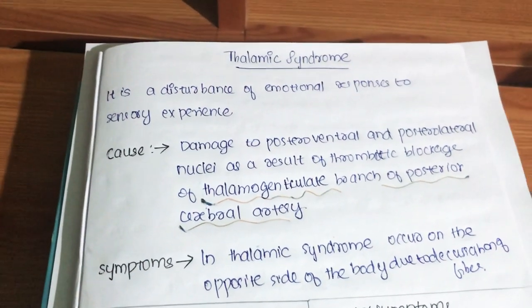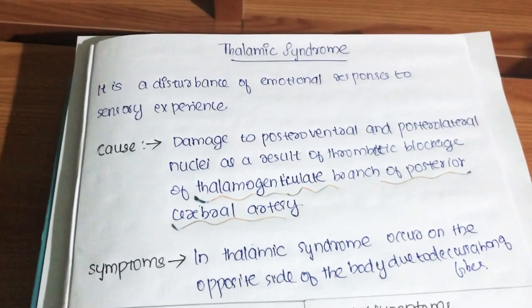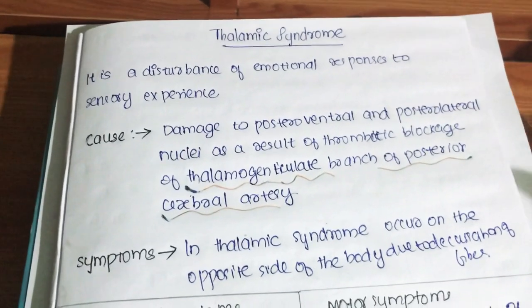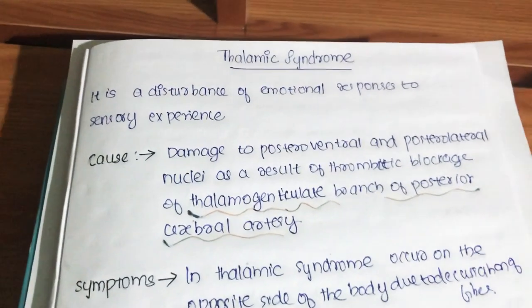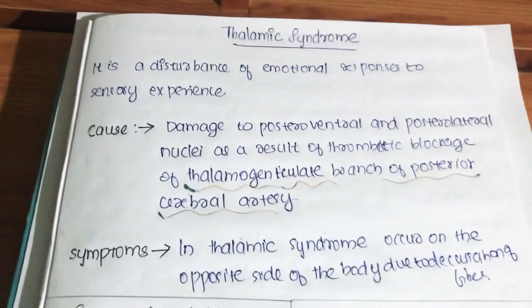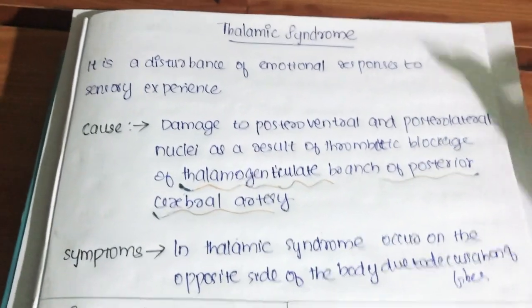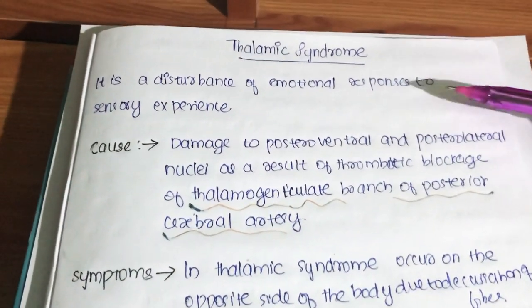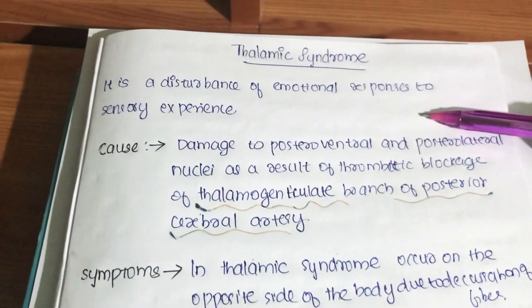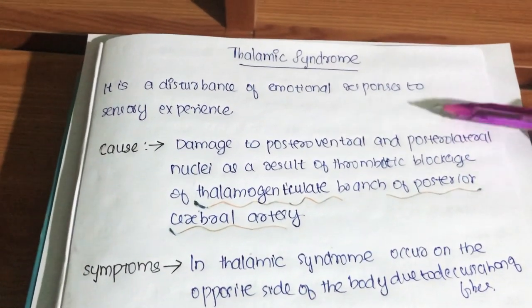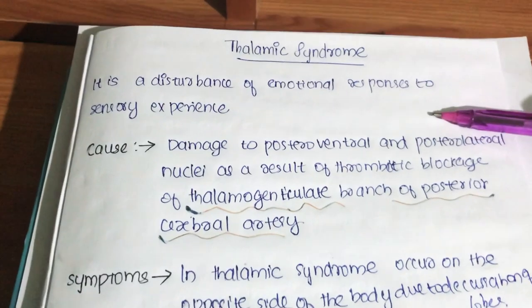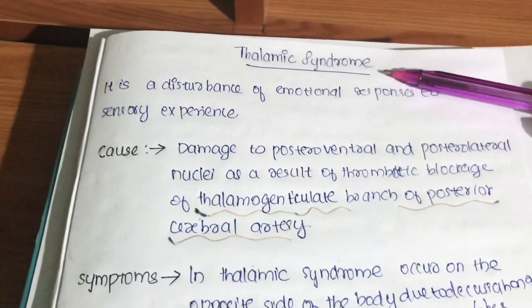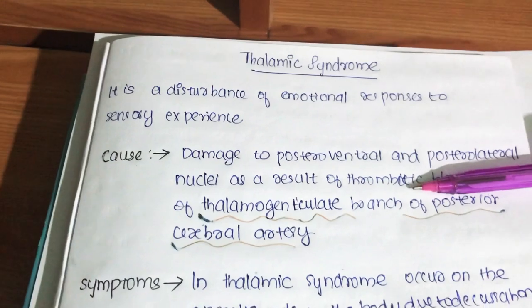Welcome to ABC Med. Today we are going to discuss thalamic syndrome in an easy and simple manner. Firstly, the definition: thalamic syndrome is a disturbance of emotional responses to sensory experience.